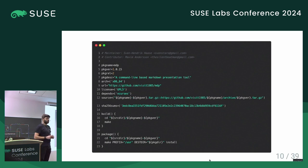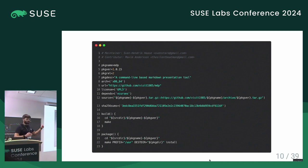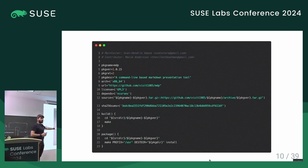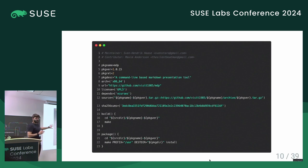A quick technical question from the audience: are the license and depends variables bash arrays? Yes, these are all bash variables and bash arrays. And this is actually the original PKGBUILD for this package — if you go to the Arch Linux repository you'll find the exact same package. All the code we're seeing today is taken as-is from the various repositories.